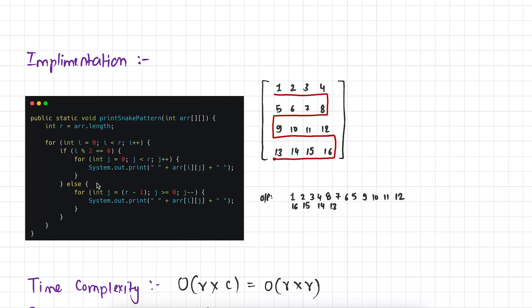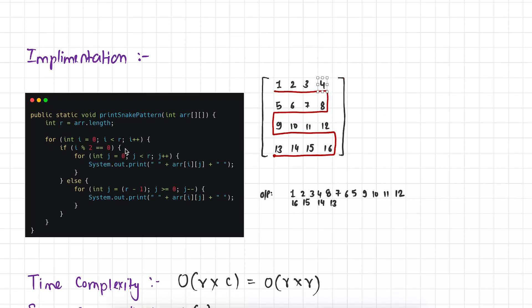And in else part again we are running a loop from j equal to r minus 1 till 0. Why is like that? Because now in this case we have to print all the elements in reverse order from right to left. And what is the index of the right most element? r minus 1. Because there are 4 elements and 4 minus 1 is 3. So 3 is the index of the last element. So this is all about this function.